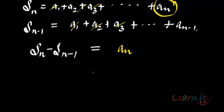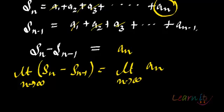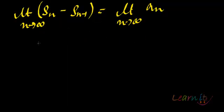So this is equal to An. So that would mean that limit as N tends to infinity of Sn minus Sn minus 1 is equal to limit An, correct?